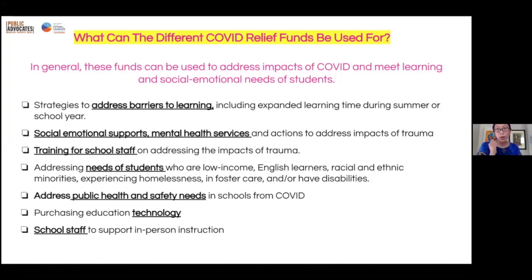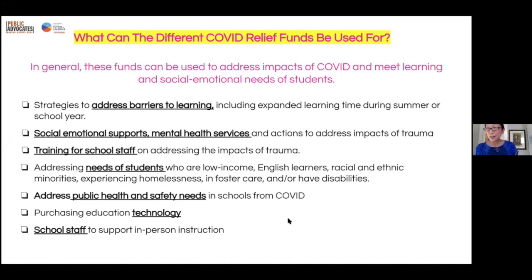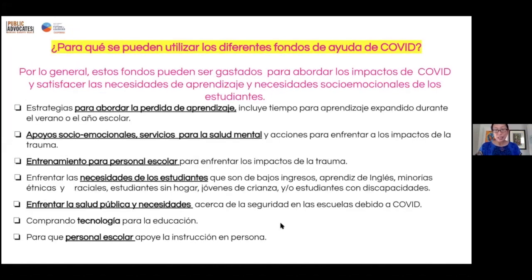Family engagement is also an important need and critical to student learning — that's another thing that could be funded with this money. Allowable uses include: addressing barriers to learning, social-emotional supports and mental health services, training for school staff on dealing with the impacts of trauma, meeting the needs of English language learners, Black students, and students with disabilities. It can also cover new public health and safety needs in schools because of COVID, purchasing technology, or hiring more staff. These slides are translated in Spanish, and we hope to get them in Arabic as well.